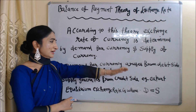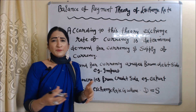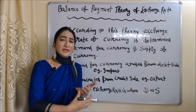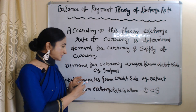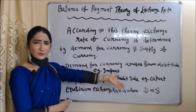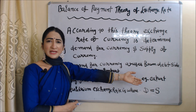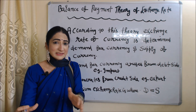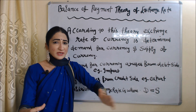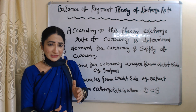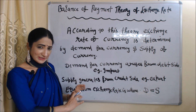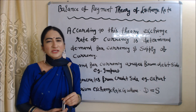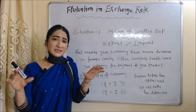Demand for currency arises from the debit side — for example, imports. For making payment of imports, we are creating demand for foreign currency. Supply of currency is generated from the credit side — for example, exports. Through export, we are receiving foreign currency, so supply of foreign currency is increasing in our country. According to this theory, the equilibrium exchange rate is established where demand for currency is equal to supply of currency.